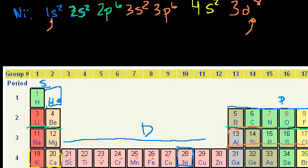So when you're filling the d block, you take the period that you're in minus 1. So we were in the fourth period in the periodic table. But we subtracted 1, right? This is 4 minus 1. And so this is the electron configuration for nickel.